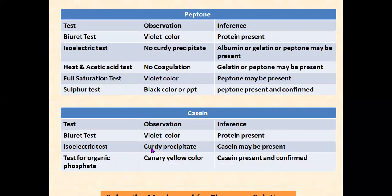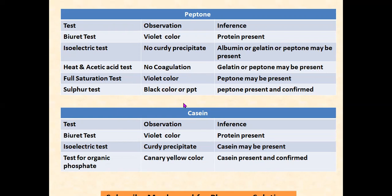For peptone: sulfur test gives black color or precipitate — peptone present and confirmed. For casein, only three tests are carried out: biuret test — violet color, protein present; isoelectric test — curdy precipitate (not seen for albumin, gelatin, or peptone); only casein gives curdy precipitate. Then test for organic phosphate — canary yellow color — casein present and confirmed. That is how you use the chart for identification of unknown protein samples in practicals.